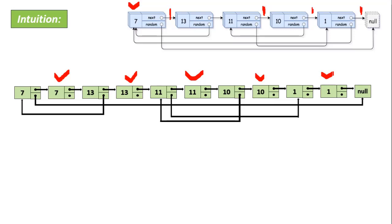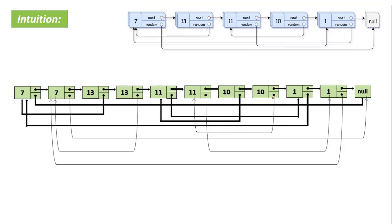Now what we're going to do is fix the random pointer. Node 7's copy will connect its random pointer to null. Node 13's copy will connect its random pointer to node 7's copy. Then node 11's copy will connect its random pointer to node 10's copy, and so on. They will be represented like this.